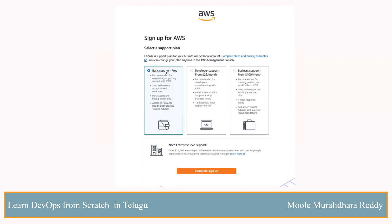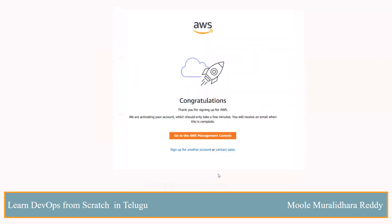There are three options here: basic support, developer support, or business support. After your practice or maintenance, the basic support is free. Select the free basic support. It is free to execute. Now you need the free tier. Congratulations!